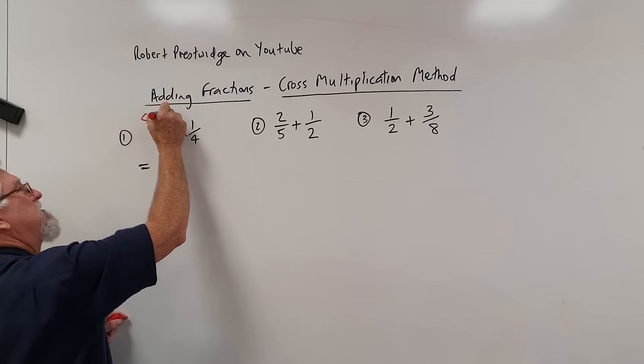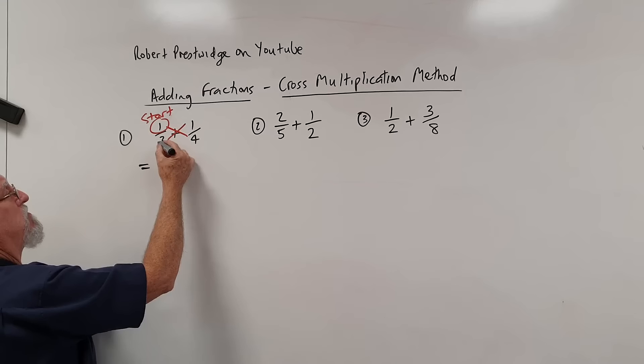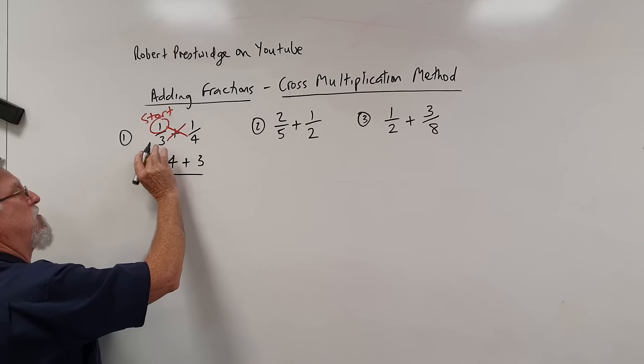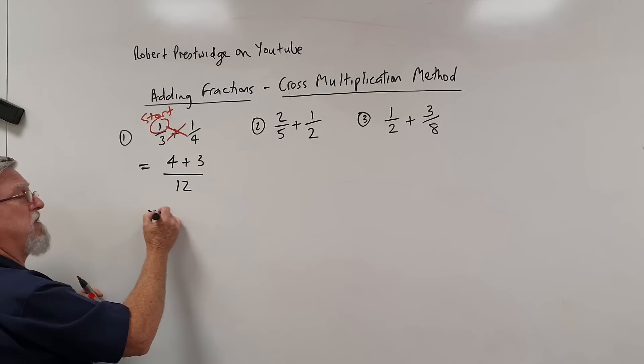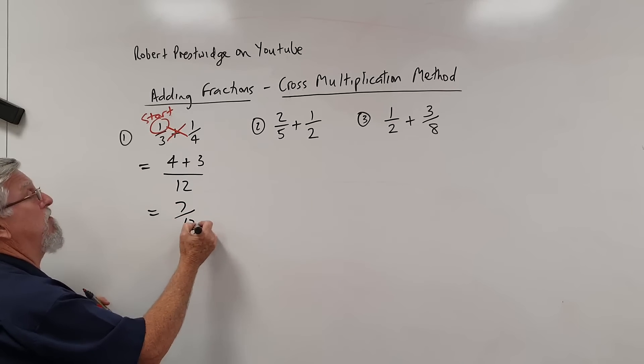That's where we start. Slow down, start there. So it's 1 times 4 is 4, 1 times 3 or 3 times 1, doesn't matter which way, is 3. And then 3 times 4 is 12. So instead of going common denominator, this forces a common denominator without thinking and you have 7 twelfths.